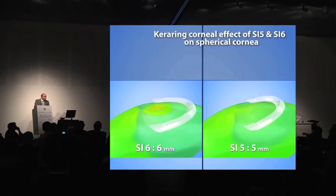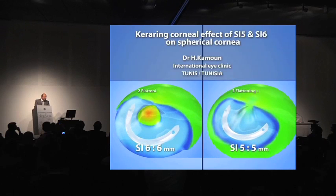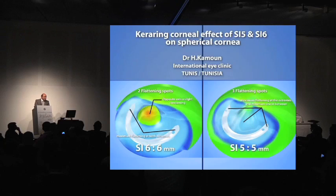I will show you now a short video showing a theoretical effect of SI5 and SI6 on a spherical cornea. With SI6, we observe two flattening spots at the extremes of the ring, and in the area in between — the opposite axis — we have a slight steepening. This explains the strong astigmatism effect of SI6 and its reduced spherical correction.